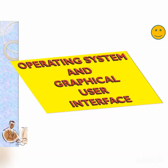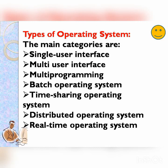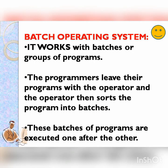This is operating system and graphical user interface. The following types of operating system are: single user, multi user, multi programming, batch operating system, time sharing operating system, distributed and real time operating system. In the previous class we discussed single user, multi user and multi programming. Today we will discuss batch operating system.